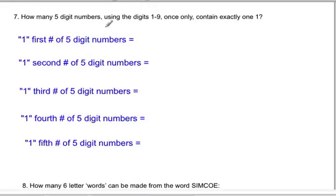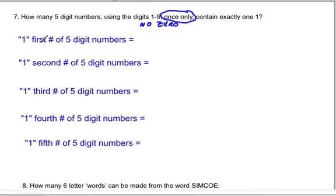For question seven: how many five-digit numbers using the digits one through nine — notice there is no zero — contain exactly one 1? We have to consider five different scenarios in our five-digit numbers: where 1 comes first, second, third, fourth, or fifth. If 1 comes first, then we have one choice for the first digit, and since we can't use zero, we have eight choices for the second digit.